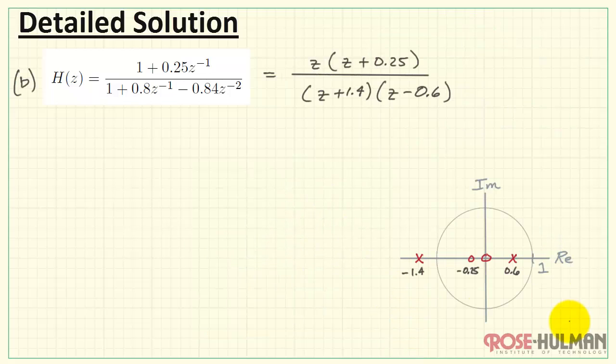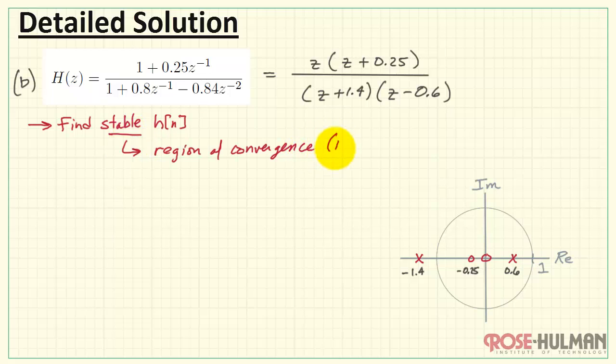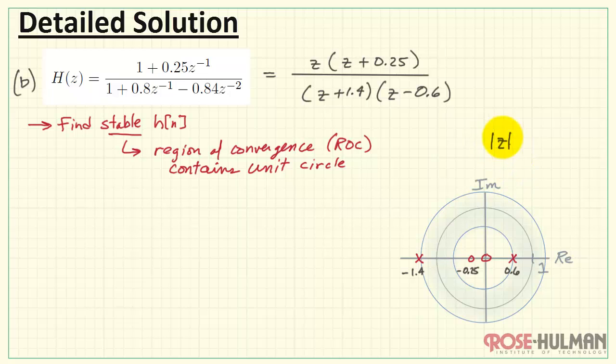Now we will need this pole-zero diagram as the beginning point for part B. We want to find a stable impulse response, H of n. Stable means the region of convergence, or ROC for short, must contain the unit circle. As we look at our diagram, we need to trace out two circles that intersect these two poles. Here's the first one, and here's the second one. We then select the region of convergence to contain that unit circle. That is this annulus, or washer shape. Now we describe this by saying that the magnitude of z has to be confined in the region of 0.6 up to 1.4.